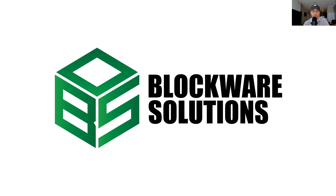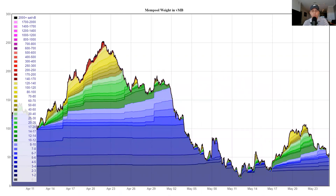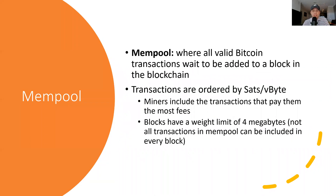Let's go ahead and kick this off. So this is something called the mempool. What is the mempool? The mempool is basically where all valid Bitcoin transactions wait to be added to a block in the blockchain. These transactions sitting in the Bitcoin mempool — which means memory pool — are ordered by something called sats per virtual byte. This is basically a way for miners to select the transactions that pay them the most in fees. Blocks in Bitcoin currently have a weight limit of four megabytes, meaning not all transactions in the mempool can be included in every block. So miners are automatically selecting the transactions that pay the most sats per byte.